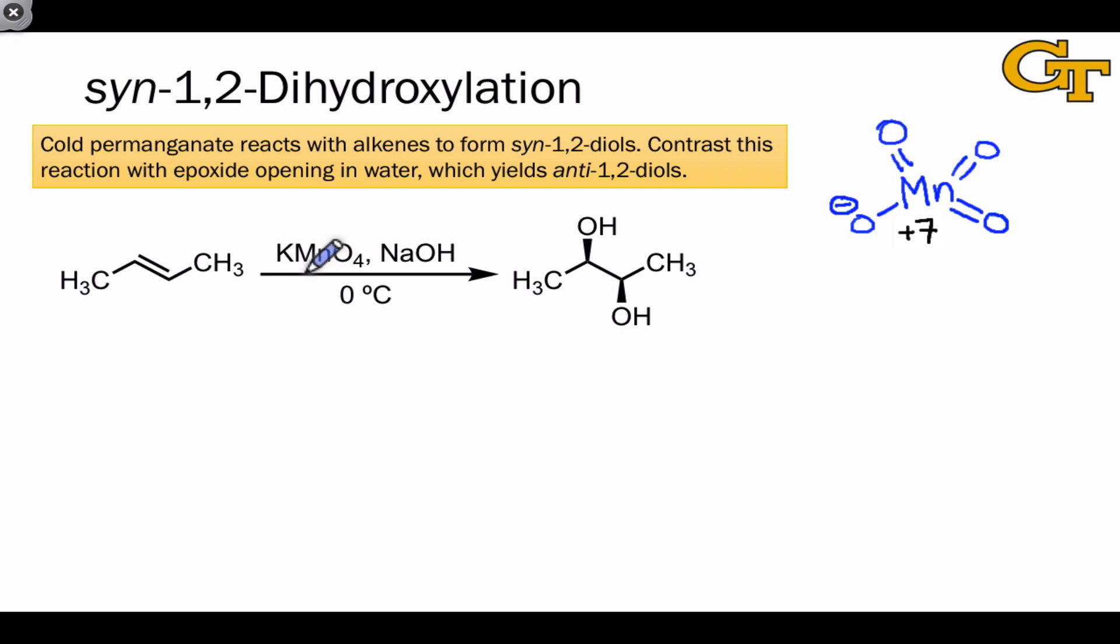When we combine permanganate in the form of potassium permanganate in basic aqueous solution at low temperature, 0 degrees C, with an alkene, the manganese is reduced to a lower oxidation number, but more importantly for our purposes, the alkene is oxidized to a vicinal or 1,2-diol.